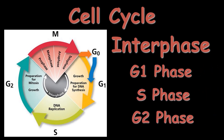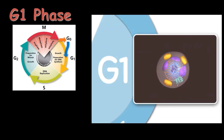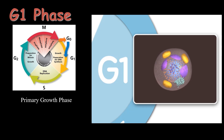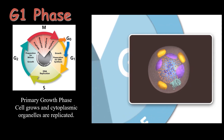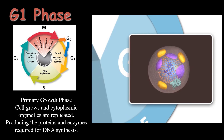According to their functions: the G1 phase, also known as the primary growth phase, is the phase in which the cell organelles duplicate and the cell grows in size. After G1 phase, there is the S phase in which DNA replication takes place. All the proteins and enzymes required for DNA synthesis are synthesized during G1 phase.